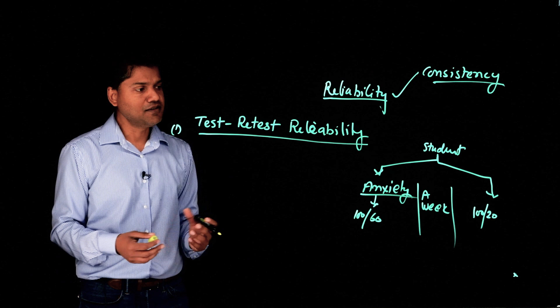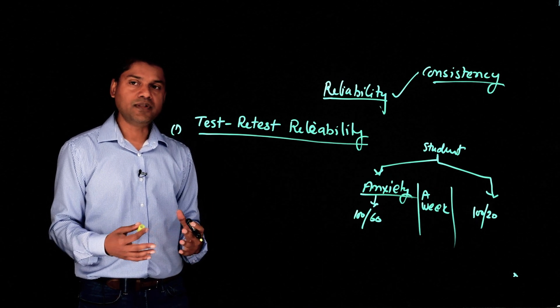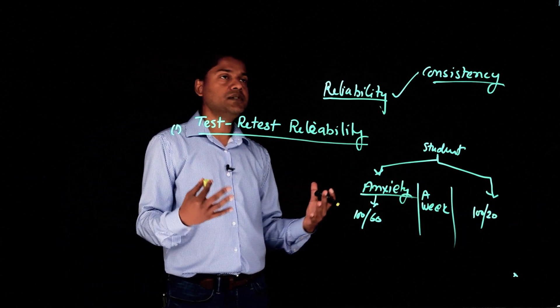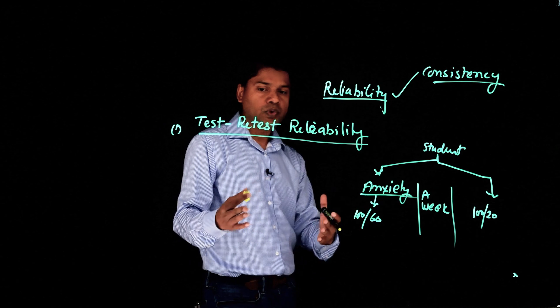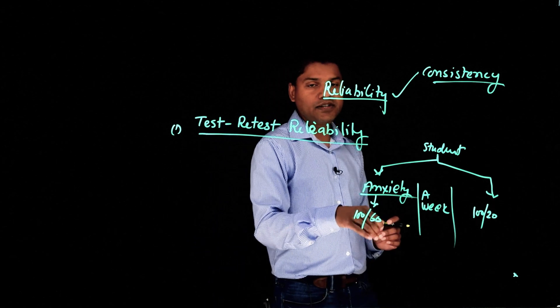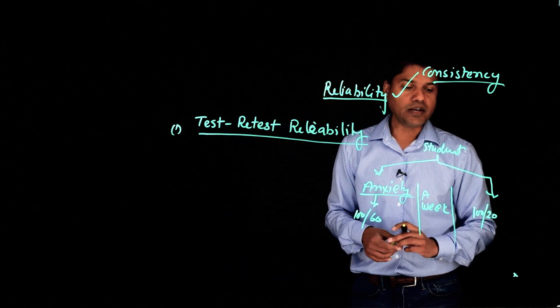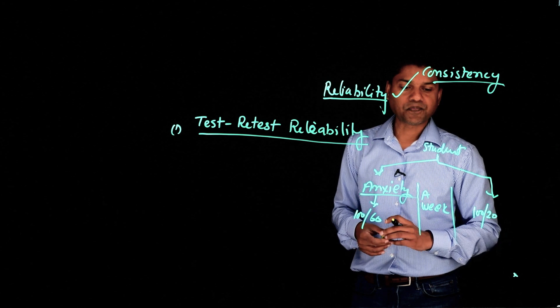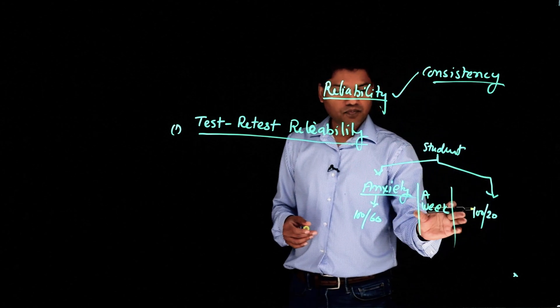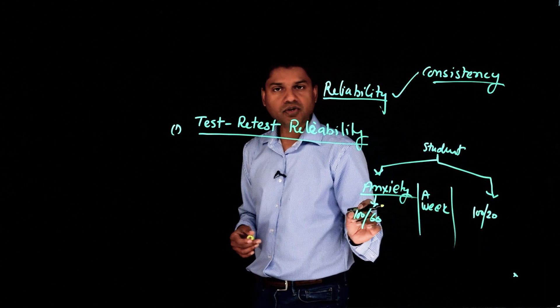It is not. It doesn't make sense. How could, without any intervention, the same student a week before scored 60 on this scale, and then a week later, 20? It doesn't make sense. So this test is not reliable.